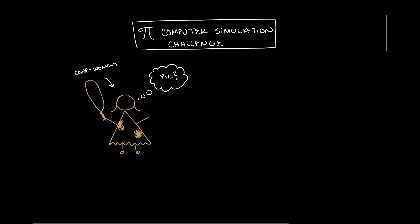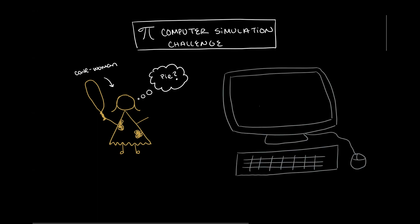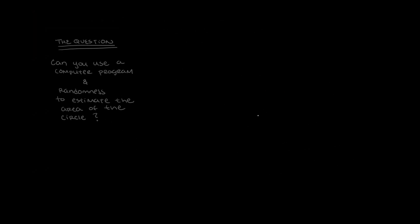But the human race has invented computers. Not only that, but you can write a computer program to simulate throwing a dart to a circular target. With these tools, could you estimate the area of a circle without using the mathematical constant Pi? Better yet, is there a way to calculate Pi using randomness?